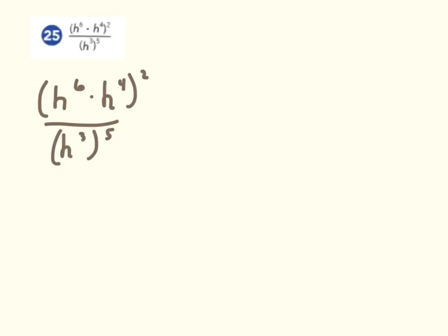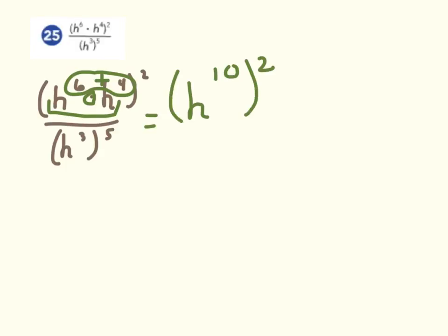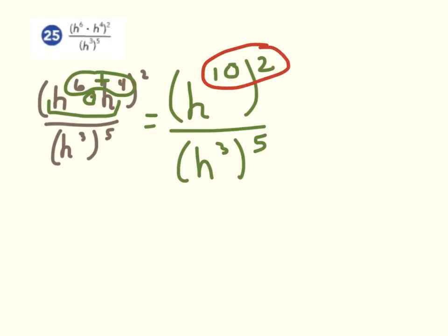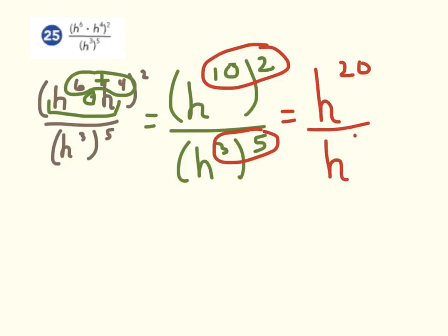For number 25, this looks like a similar problem. Start in the numerator and inside the parentheses: same bases and we're multiplying — that's the product rule. Keep the base and add the exponents: 6 plus 4 is 10. Rewrite everything, then use the power rule — do the numerator first, keep the h and multiply the exponents — and the same rule in the denominator. Then one more step: since this is division, use the quotient rule. Keep the base, subtract the exponents, and h to the 5th is the final answer.